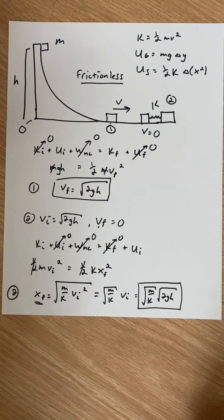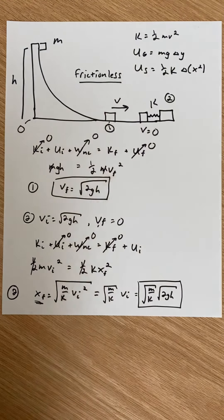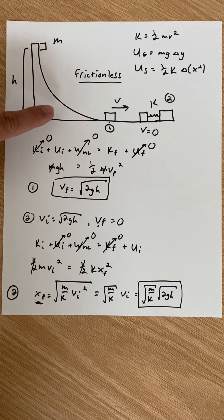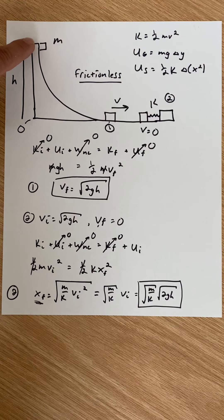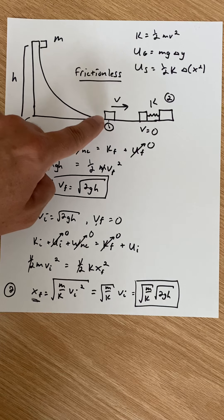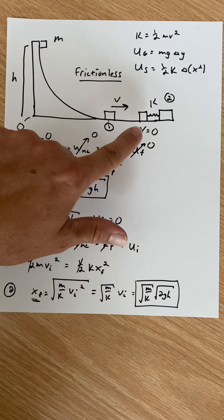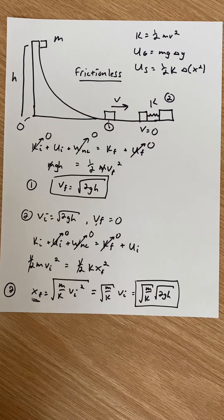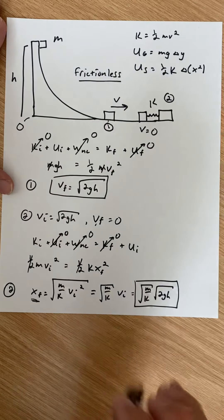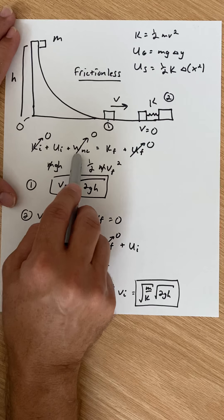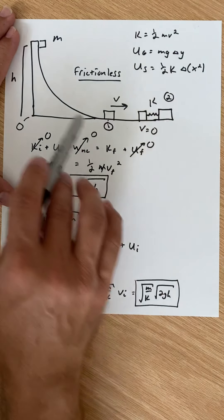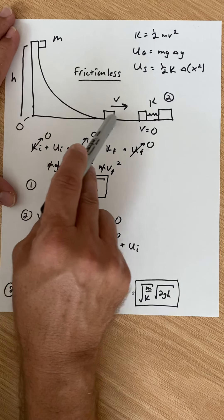Let's conceptually run through what happened. At the beginning, I had energy as gravitational potential energy. As the mass slid down the ramp, gravitational potential energy turned into kinetic energy until the mass reached the bottom. All of that initial gravitational potential energy had converted into kinetic energy. Then, as the mass moved into the spring, the kinetic energy turned into spring potential energy, storing itself in the spring. The total energy content is the same throughout, because there's no work done by non-conservative forces — no energy is leaving the system of mass, ramp, and spring.